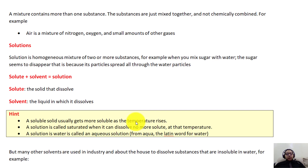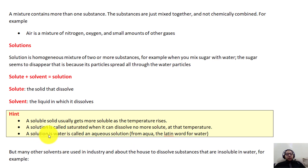A solution is called saturated when it can dissolve no more solute at that temperature. As the temperature increases it can reach a certain degree where no more solute can be dissolved inside the solvent — we call that a saturated solution. A solution in water is called an aqueous solution. If the solvent is water, we call it aqueous, which you'll find written as 'aq' in chemical reactions.